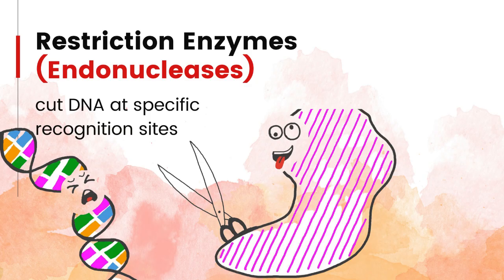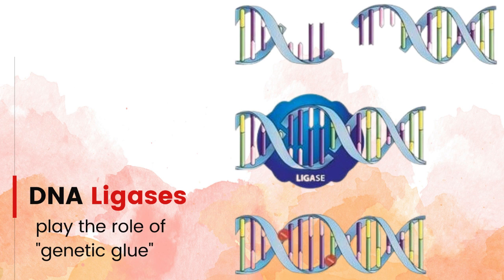Restriction enzymes, or endonucleases, are used to cut DNA at specific recognition sites, known as restriction sites. They cleave the DNA at these sites, creating fragments with sticky ends — single-stranded overhangs — that can be easily joined with other DNA fragments. Restriction enzymes are crucial for gene cloning and recombinant DNA technology. After DNA has been cut by restriction enzymes, DNA ligases play the role of genetic glue, catalyzing the joining of DNA fragments by forming phosphodiester bonds between the sugar-phosphate backbones of adjacent DNA strands.